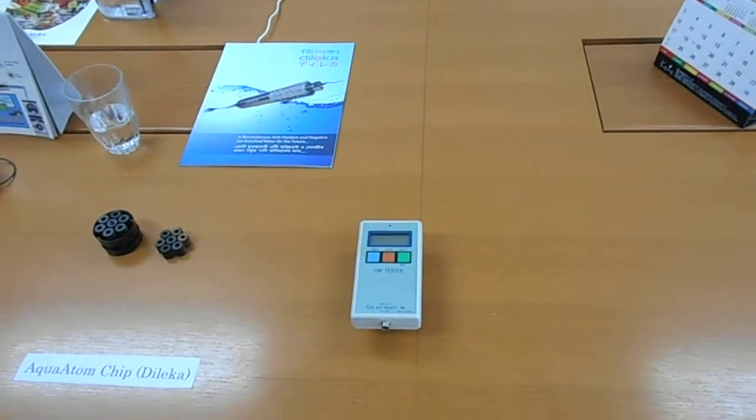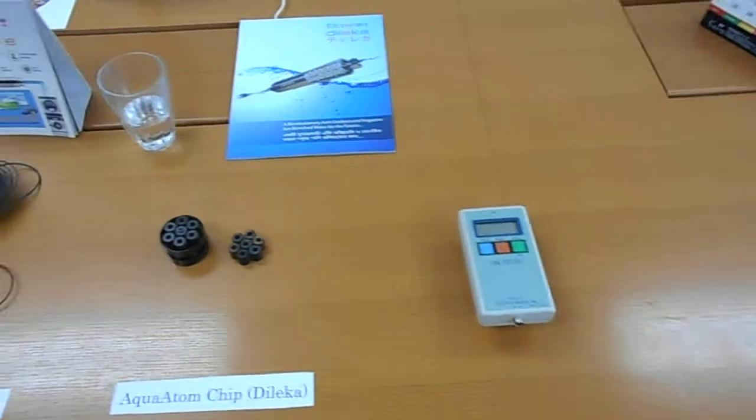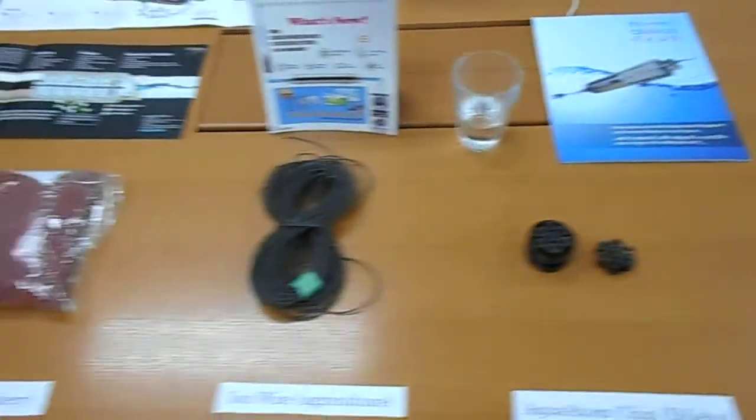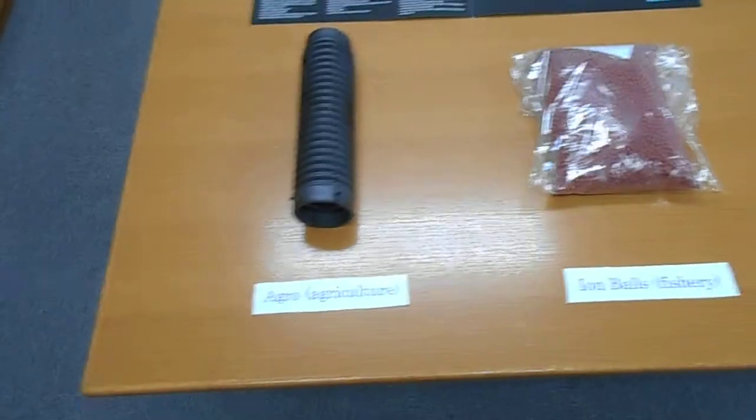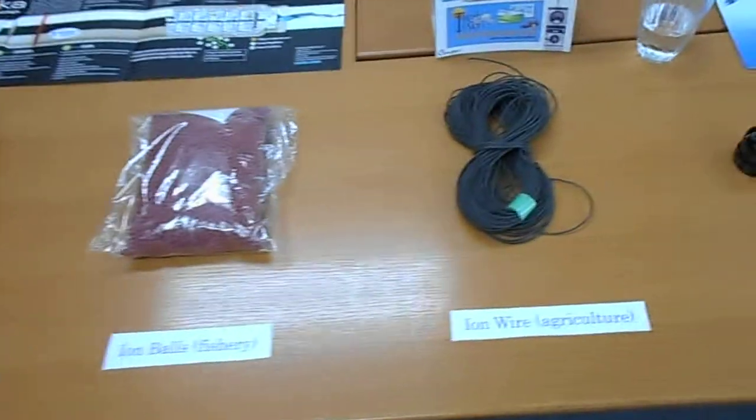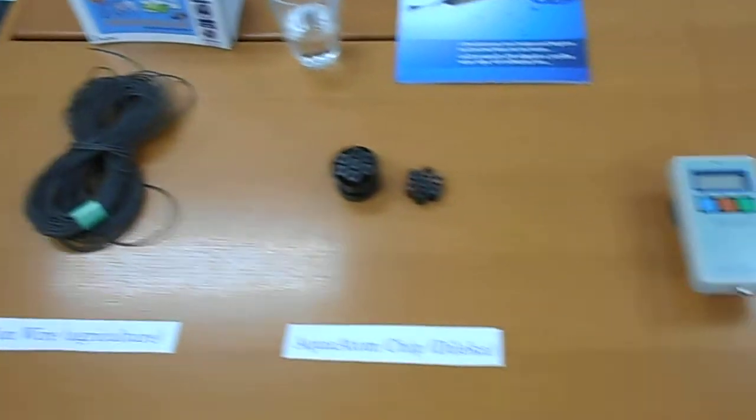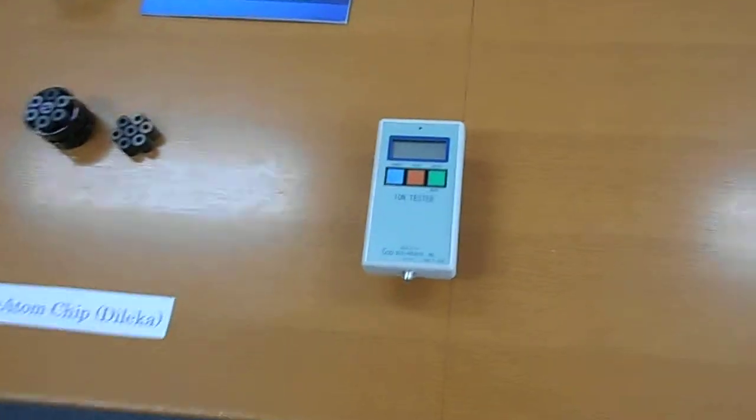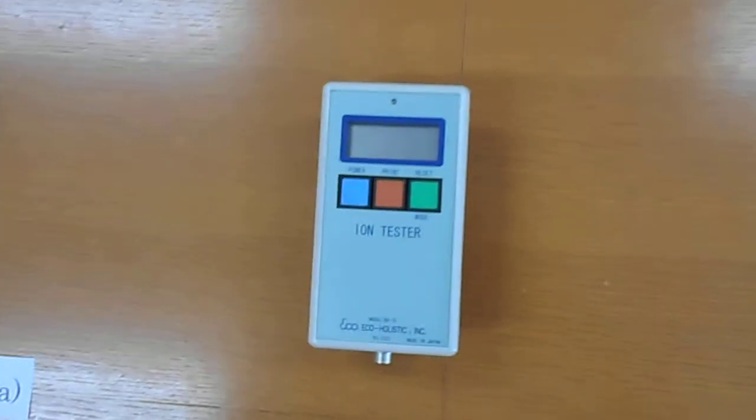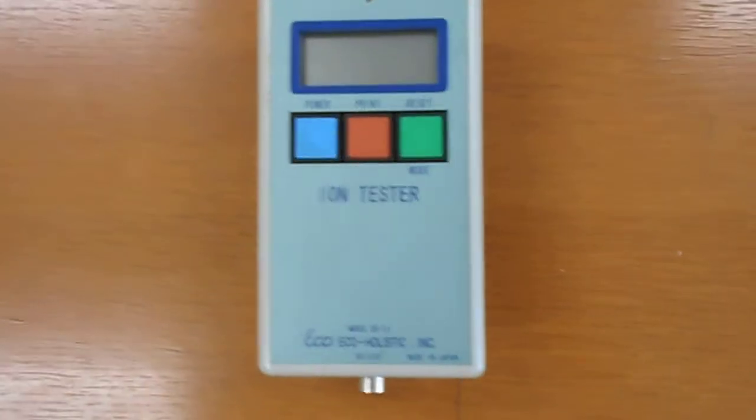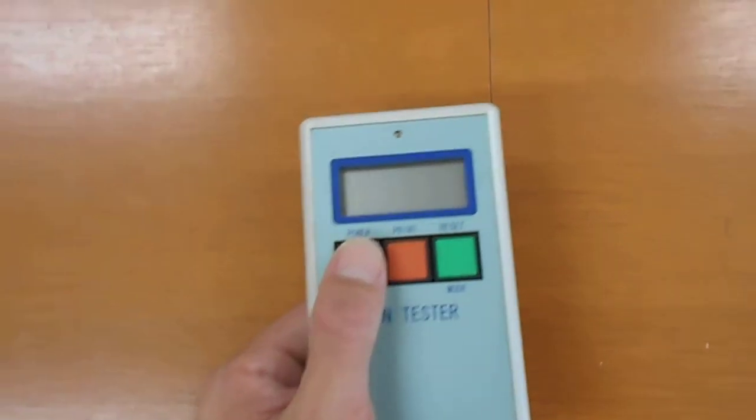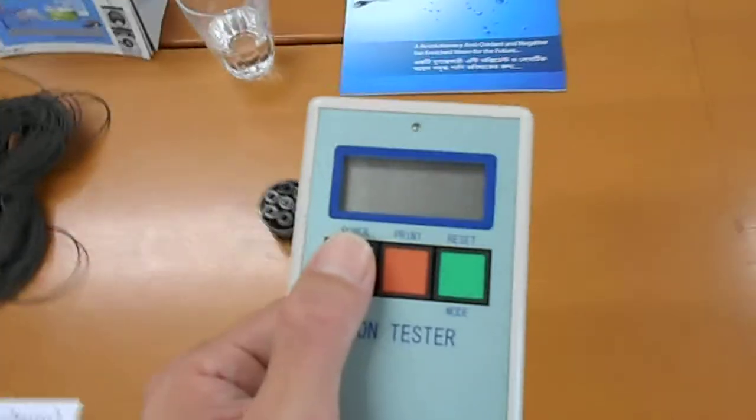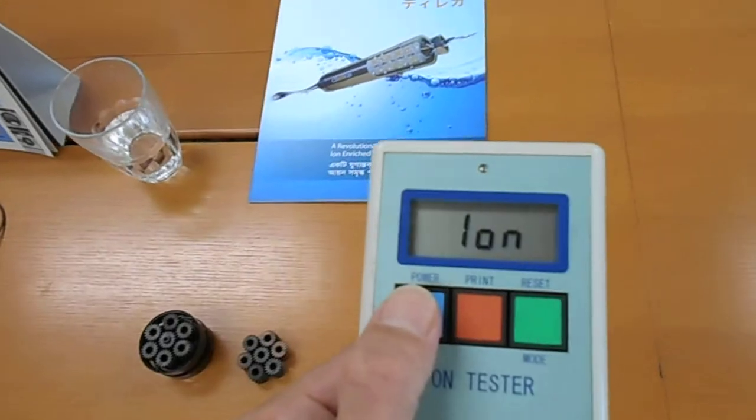Ion test take two. We have four different materials for testing. We will use the ion tester for this purpose. This is an ordinary ion tester you can purchase online or in shops. Okay, let's turn it on.